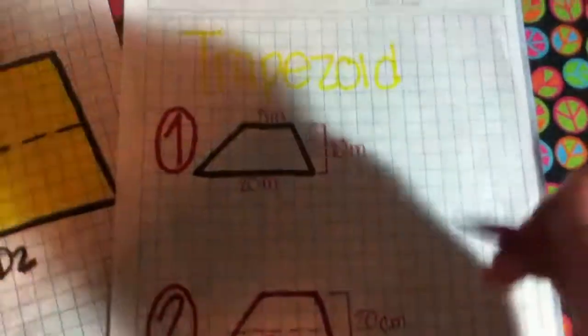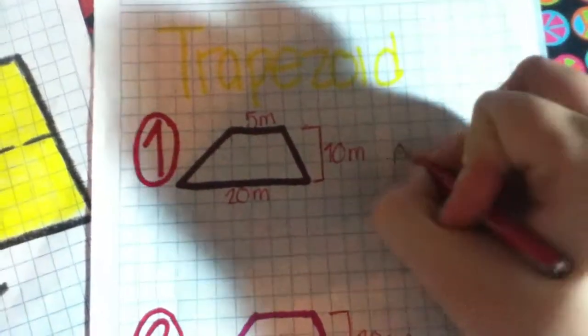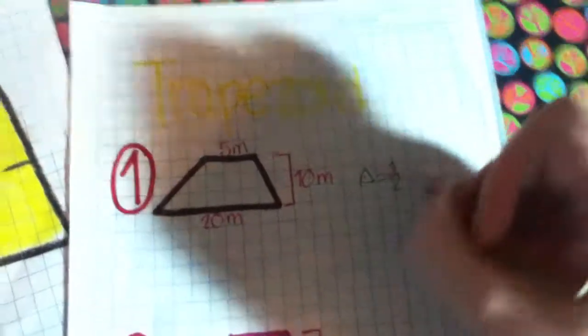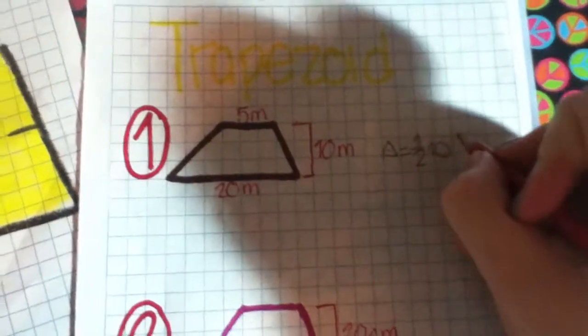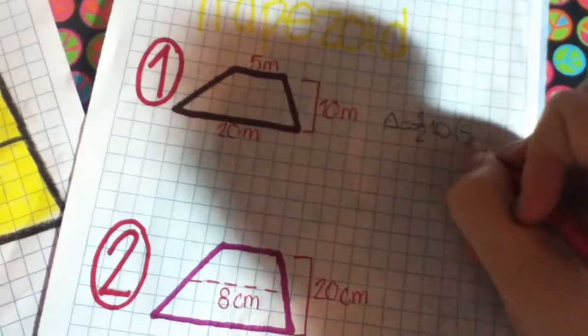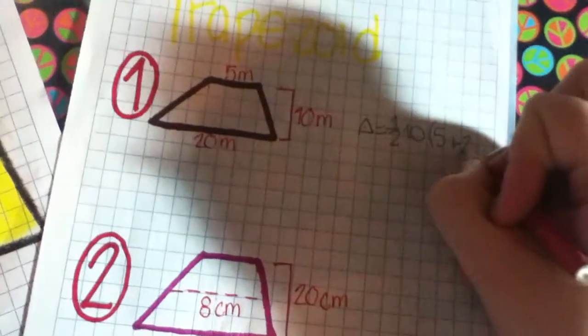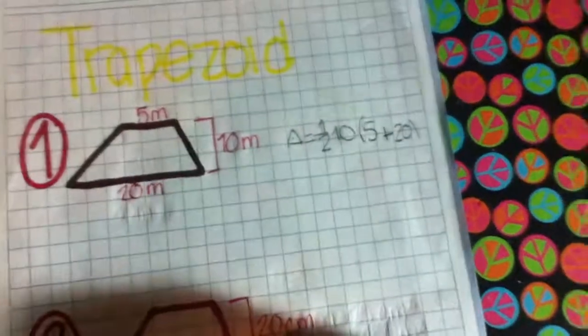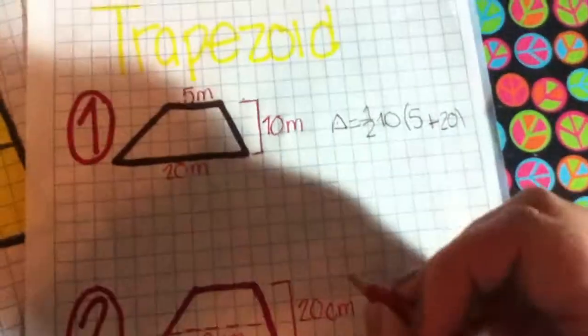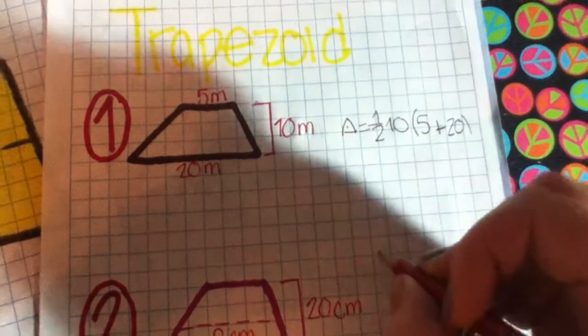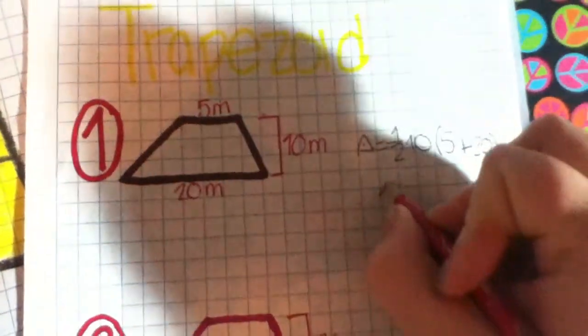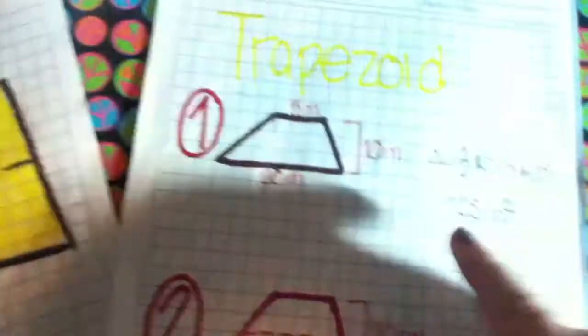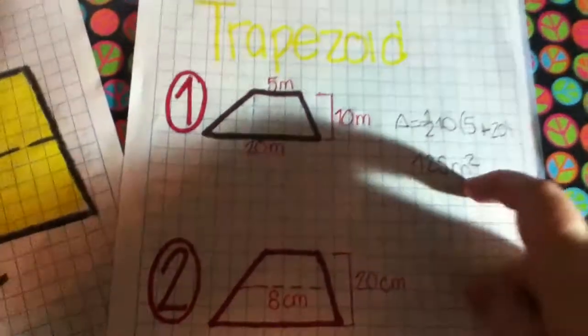We need to fill in the formula. So we have area, half, the height, which is 10 times 5 plus 20. You should try to do this. Okay, our answer is 125 meters squared.